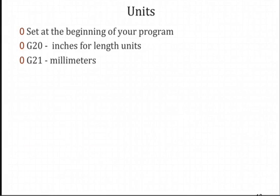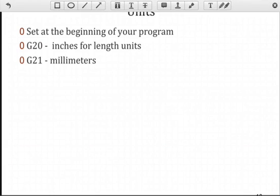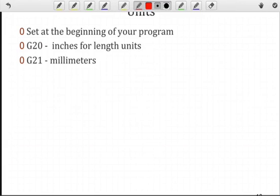Units are important to explicitly define so there's no ambiguity in terms of your motion. So it's good to set that at the beginning of your program and be consistent with your units. Don't rely upon the default of the machine. Every machine has its own default. You want to explicitly define what your units are. So G20 will correspond to all subsequent moves will be in inches. G21, all subsequent moves will be in millimeters.